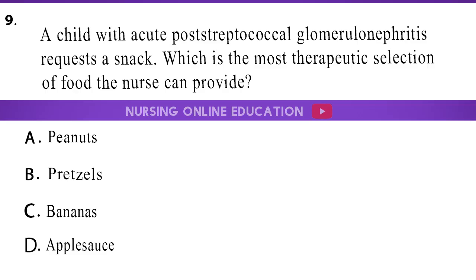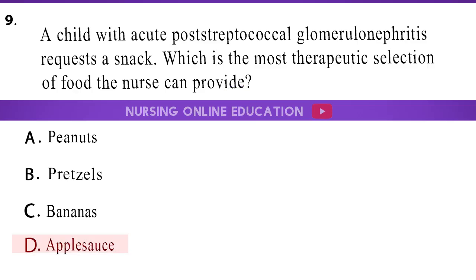Question 9. A child with acute post-streptococcal glomerulonephritis requests a snack. Which is the most therapeutic selection of food the nurse can provide? A. Peanuts. B. Pretzels. C. Bananas. D. Applesauce. The answer is option D: Applesauce.